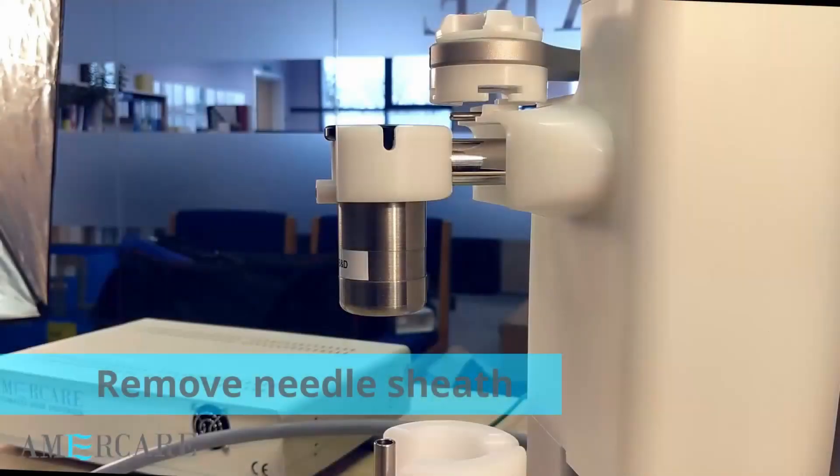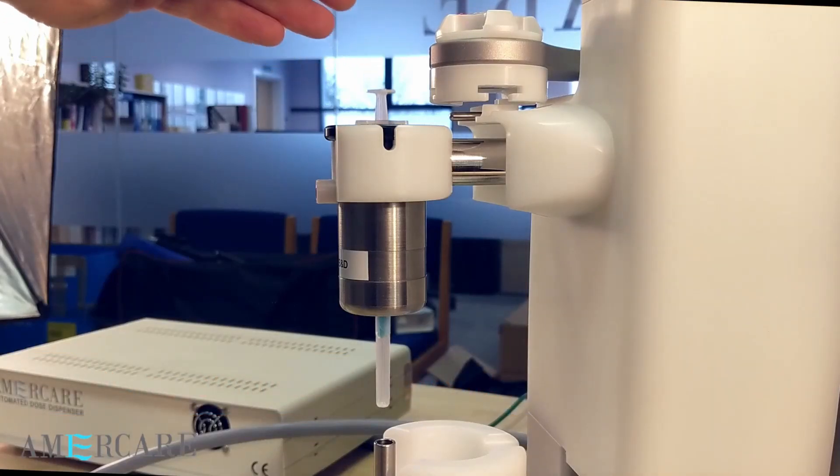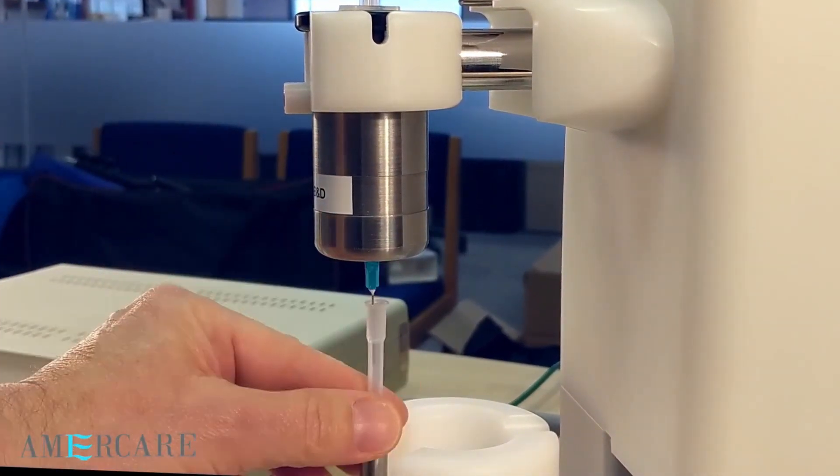The first thing to do when loading the syringe is to remove the sheath. Simply drop the syringe into the shield and pull the sheath down into the holder.